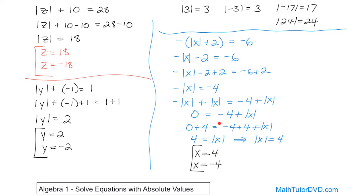If we take 4 up here, absolute value makes it 4, then 4 plus 2 is 6, and the negative makes it negative 6 — that matches. If I stick negative 4 up here, absolute value will make it positive 4, plus 2 will be 6, and then the negative makes it negative 6. So no matter which value I put in, I always satisfy the equation — this equation has two solutions. Make sure you can handle these types of absolute value problems. Solve them yourself and follow along to the next lesson where we'll continue learning how to solve equations in algebra.